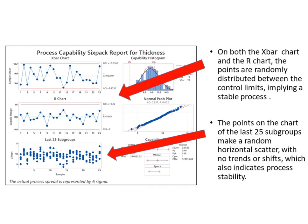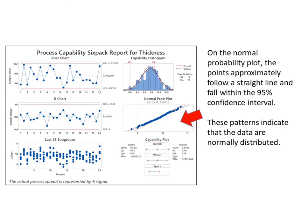On both the X-bar chart and the R chart, the points are randomly distributed between the control limits, implying a stable process. The points on the chart of the last 25 subgroups make a random horizontal scatter with no trends or shifts, which also indicates process stability. On the normal probability plot, the points approximately follow a straight line and fall within the 95% confidence interval, indicating that the data are normally distributed.